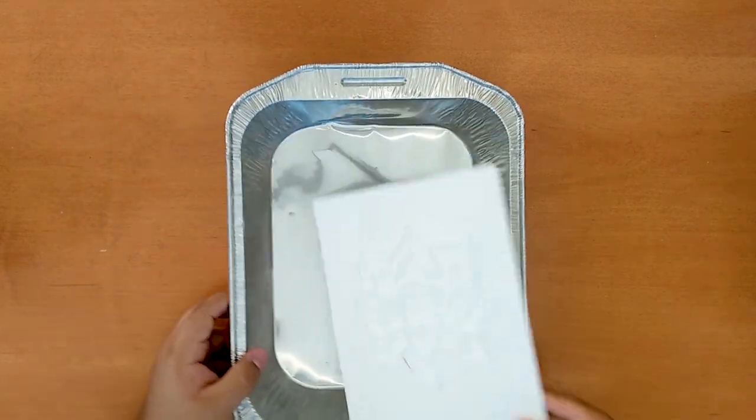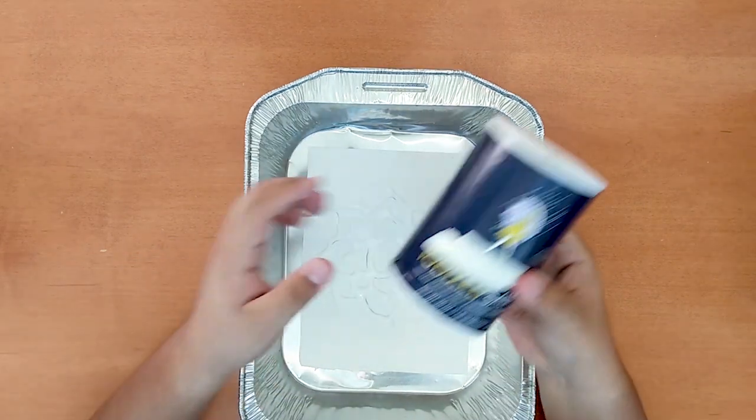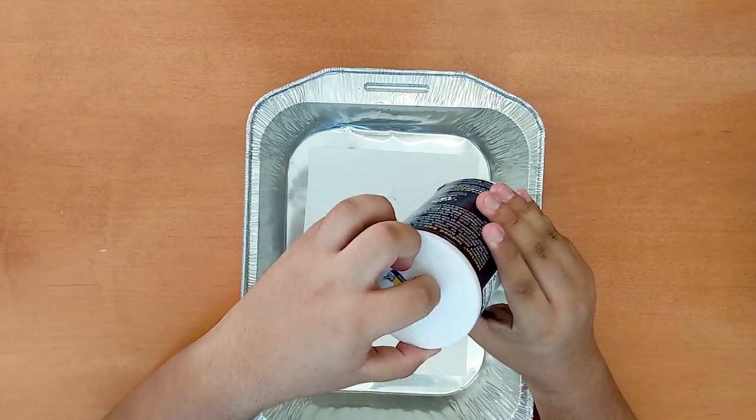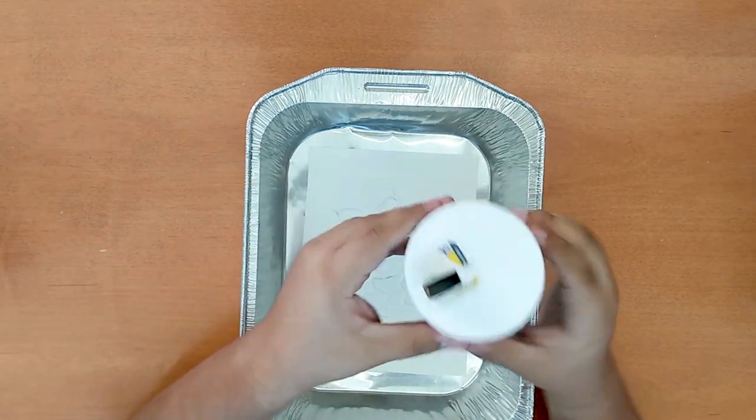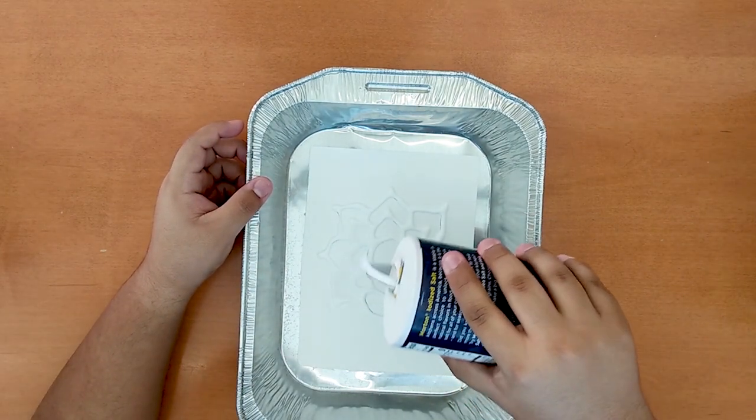Once we finish tracing, let us grab our salt and sprinkle it on top of the glue. Be sure to add enough salt to cover the entire drawing. When done adding the salt, let it sit for about five to ten minutes for the glue to absorb the salt and bond with it chemically to the point where it has hardened.